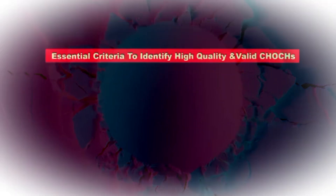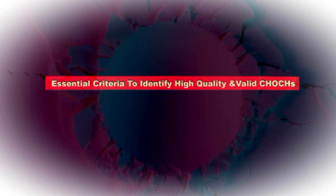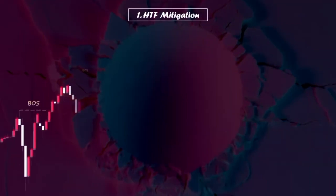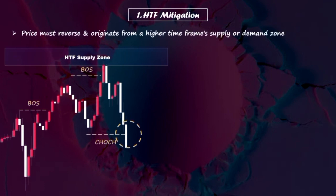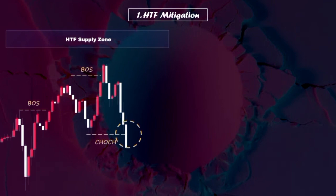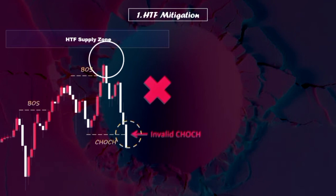Now let's move into essential criteria and rules needed to identify valid and high quality change of character patterns and understand how to use them to our advantage. The first criteria is higher time frame mitigation. A change of character is valid only under one condition: price must reverse and originate from a higher time frame supply or demand zone before breaking the recent major structure and initiating the change of character. This is a crucial point that helps us identify high probability points of interest and valid reversal patterns, preventing us from falling into traps caused by false reversals and trading in the wrong direction.